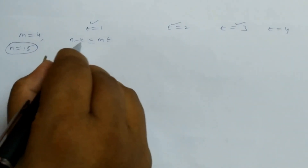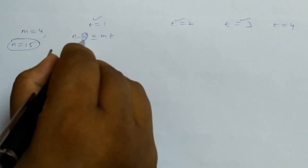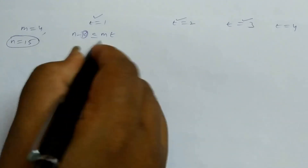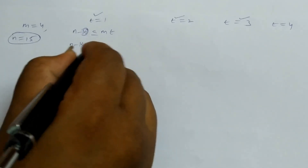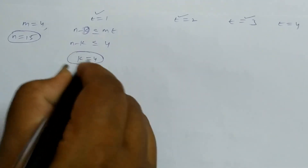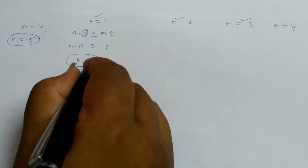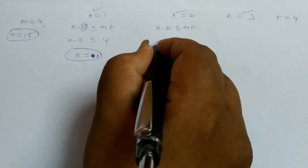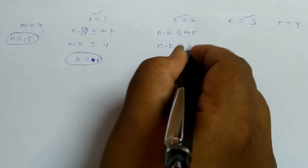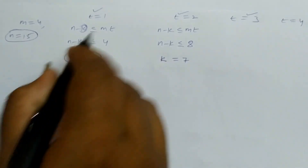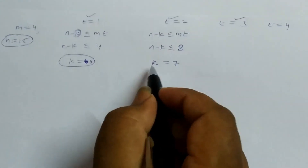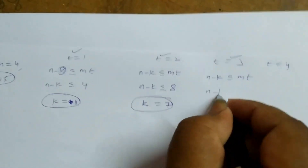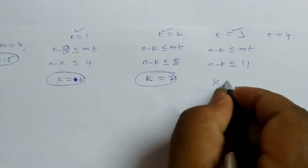For m equal to 4, n is fixed at 15 and we need to accommodate some message bits. For t equal to 1, n minus k must be less than or equal to 4, so k equals 11. For t equal to 2, n minus k is less than or equal to 8 and k equals 7. For t equal to 3, n minus k is less than or equal to 12 and k equals 5. As the number of corrections increases, k decreases.